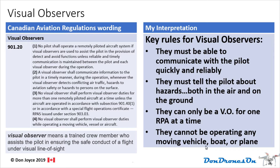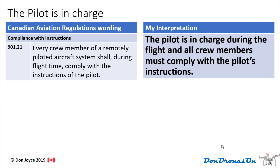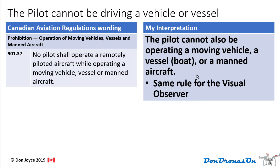Rule 901.21: the pilot is in charge during the flight and all crew members, including visual observers, must comply with the pilot's instructions. Rule 901.37: similar to the visual observer rule, the pilot cannot be operating a moving vehicle, vessel, or manned aircraft. This likely also covers bicycles and motorcycles — you cannot be riding a bike and flying a drone at the same time.